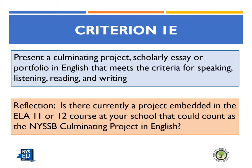Criteria 1E and 2E are used frequently because they can each earn students two points. Schools are encouraged to consider embedding the culminating project into existing coursework — think about ELA 11th and 12th grade courses at your school. Is there currently a project in one or both of these courses that could count as the Seal of Biliteracy culminating project? To qualify, a project must allow the student to demonstrate intermediate high proficiency in speaking, listening, reading, and writing in English.